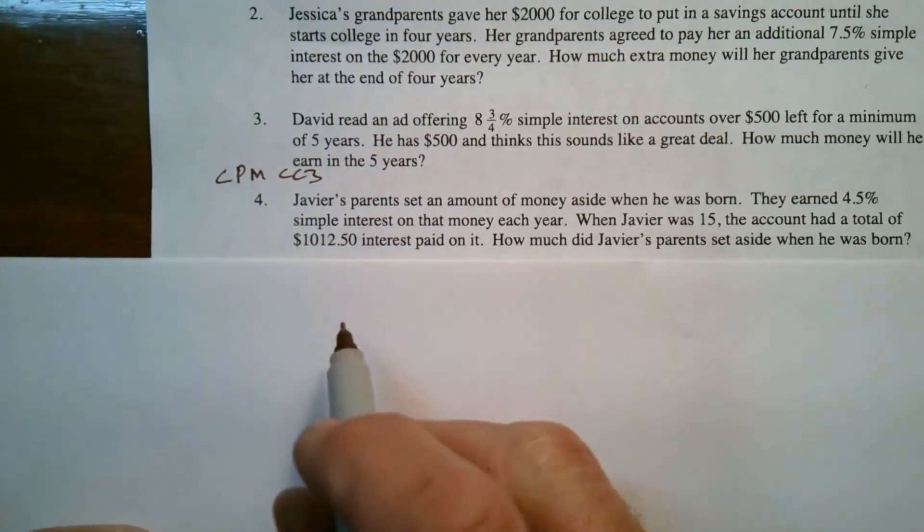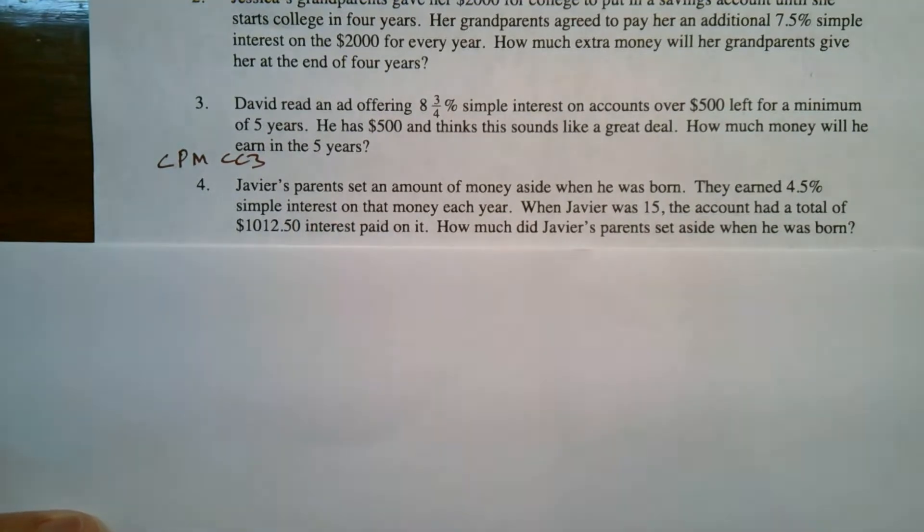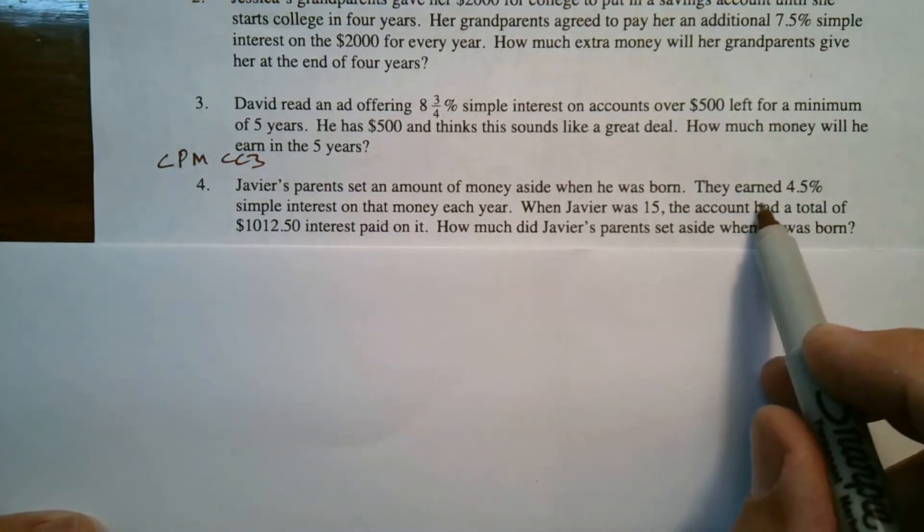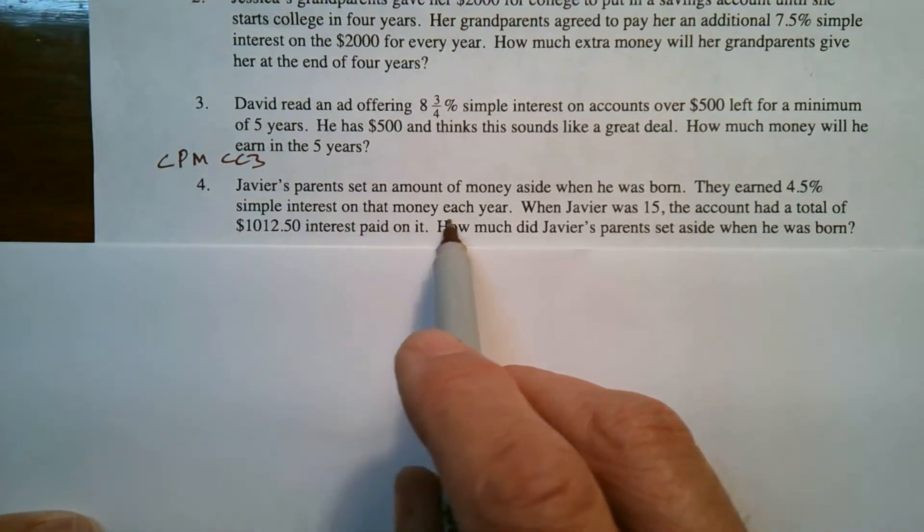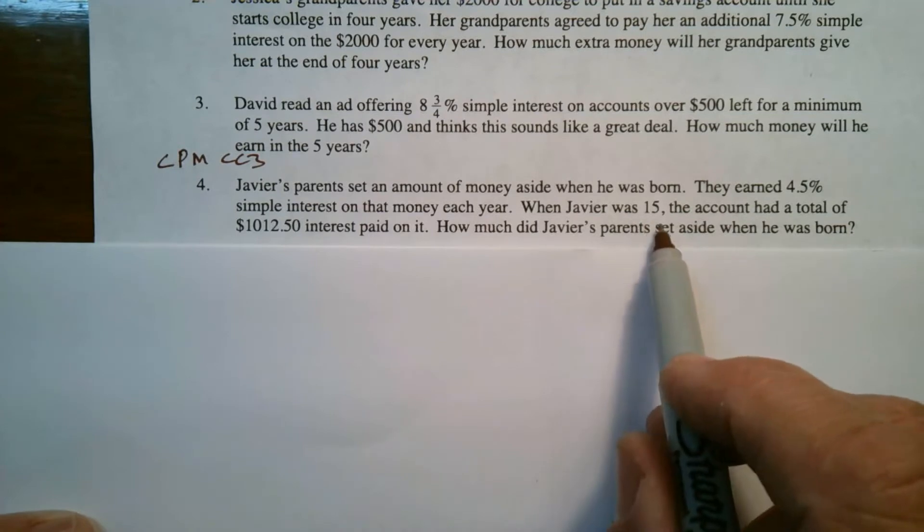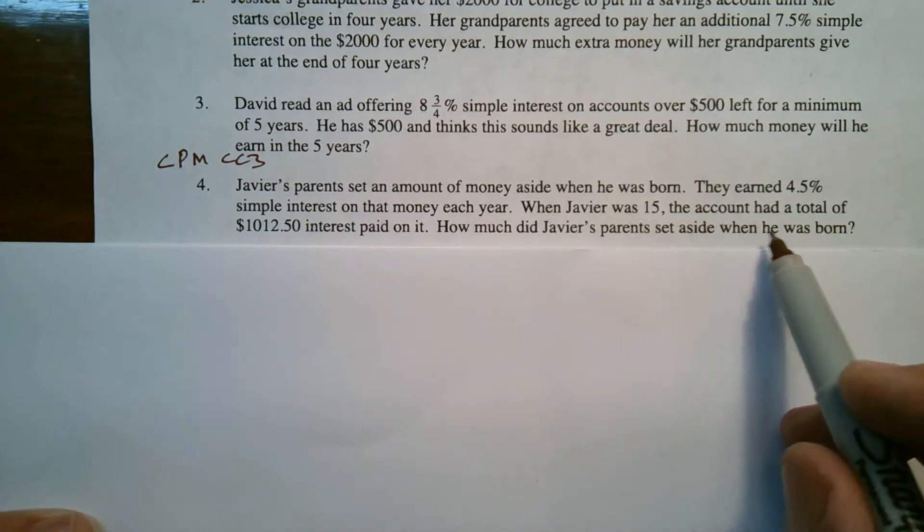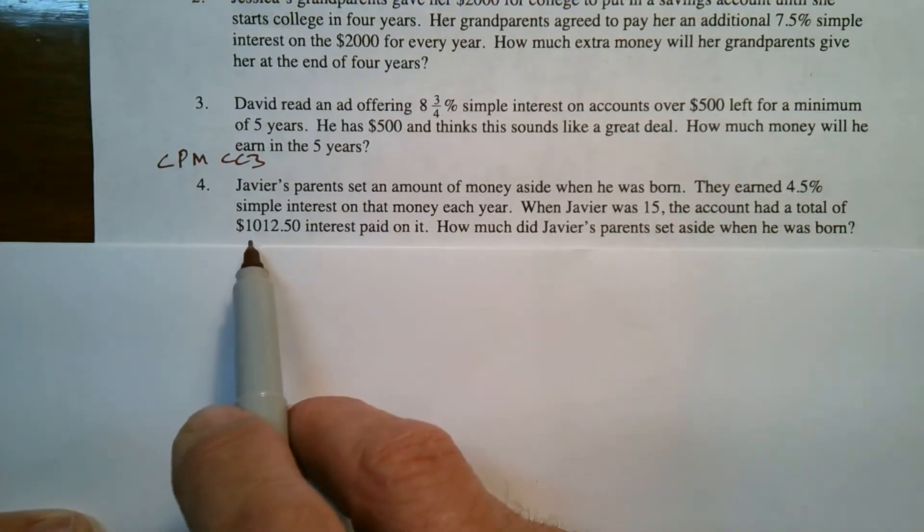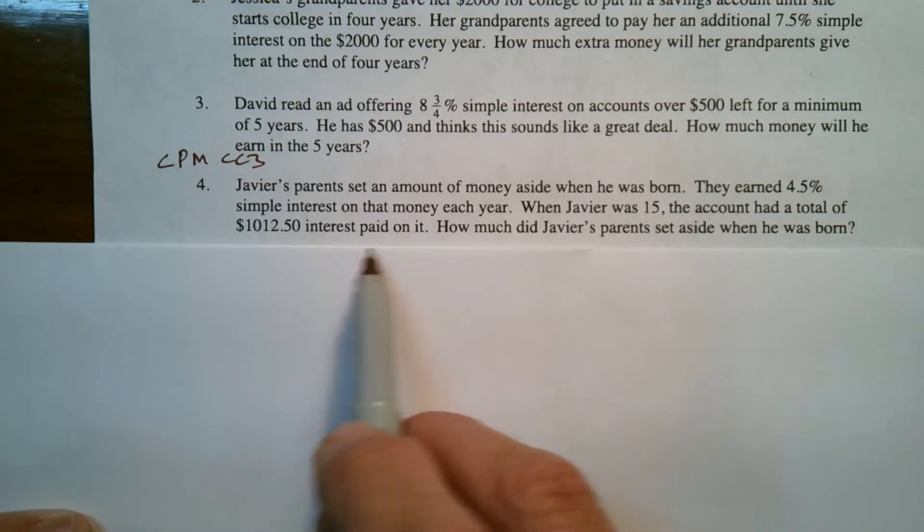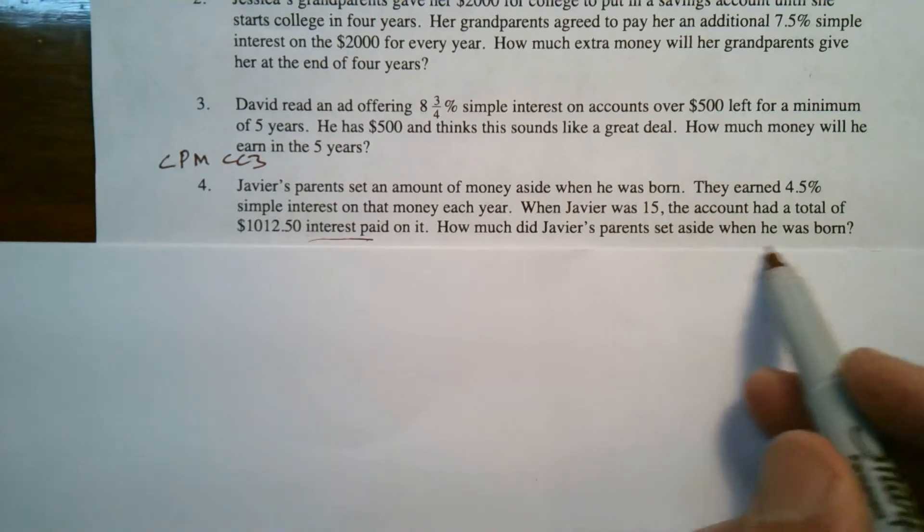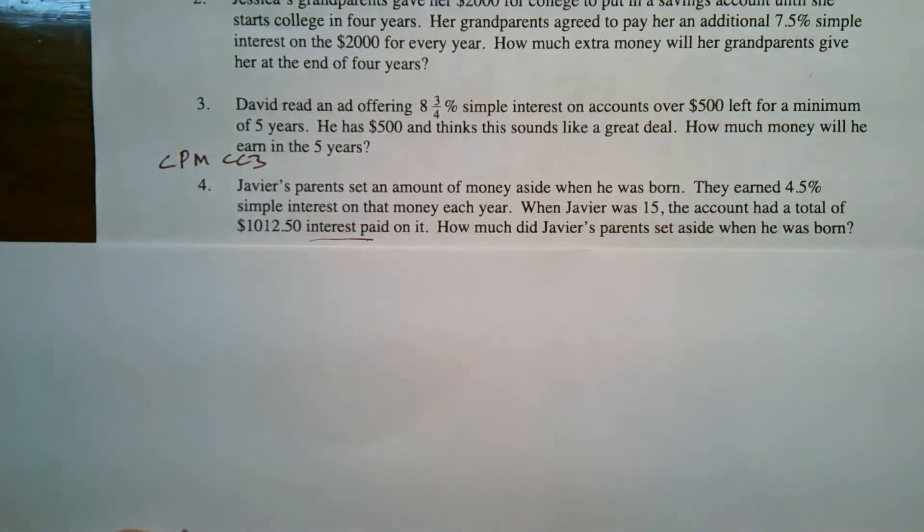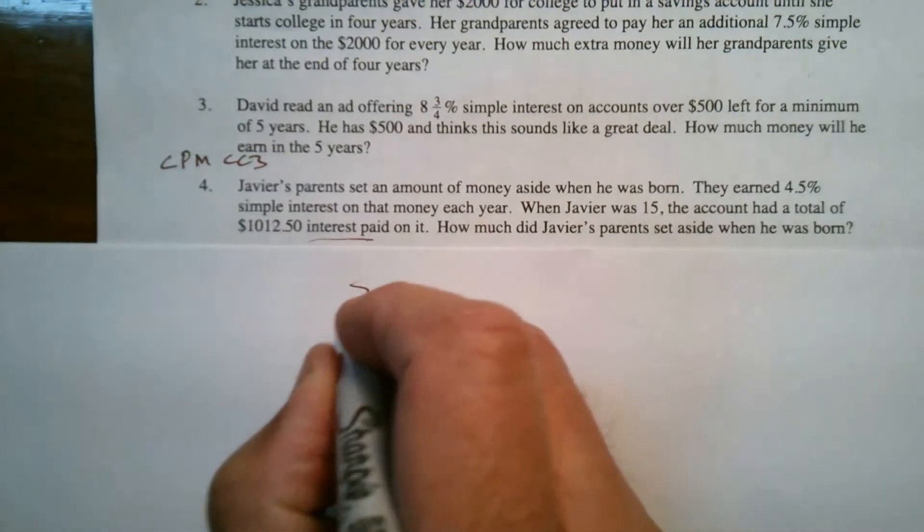So number four says, Javier's parents set an amount of money aside when he was born. They earned a 4.5% simple interest on that money each year. When Javier was 15, the account had a total of $1,012.50 interest paid. How much did Javier's parents set aside when he was born?